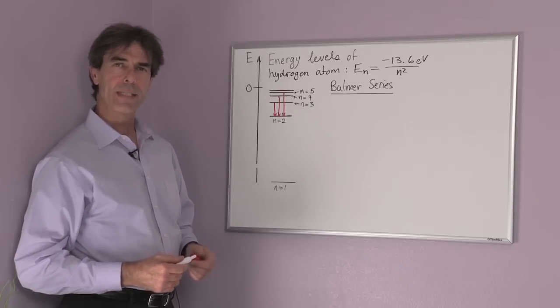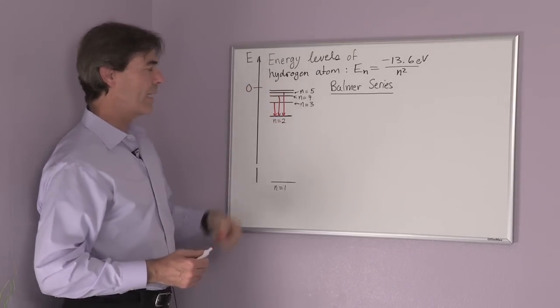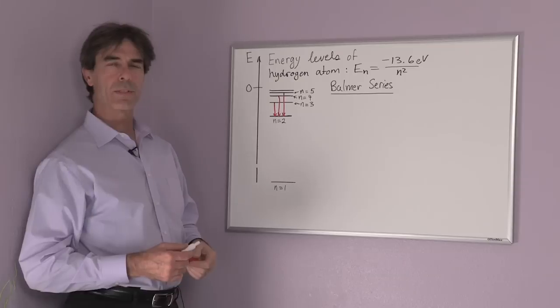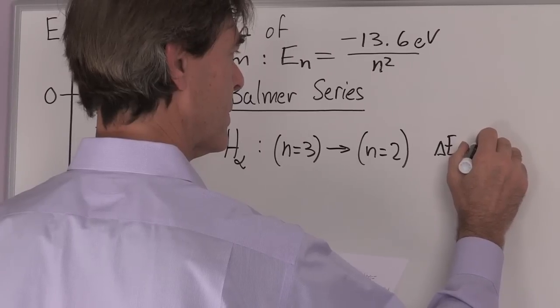They each have a discrete energy change going from n equals 5 to n equals 2, n equals 4 to n equals 2, or n equals 3 to n equals 2. Now let's calculate that.